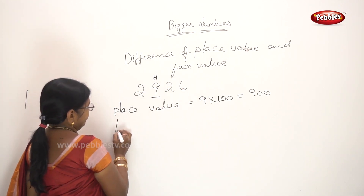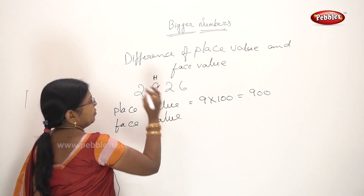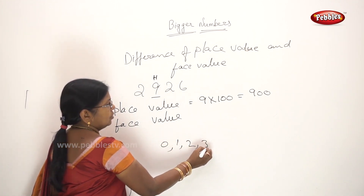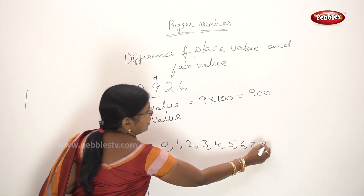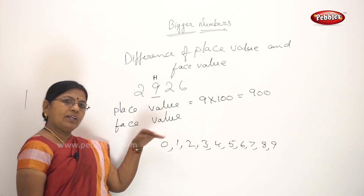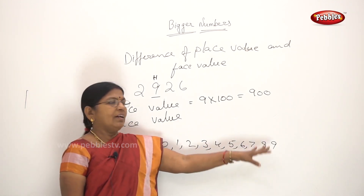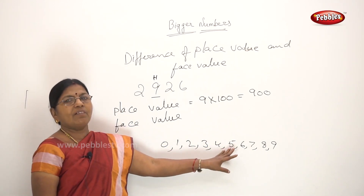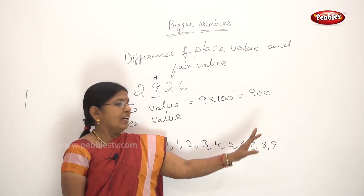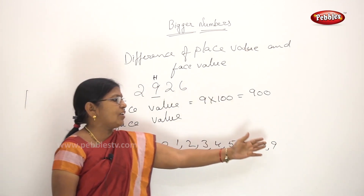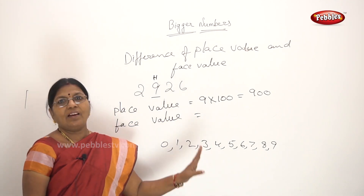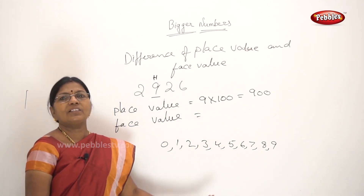What is the face value? Face value means the individual value of the digit itself. The digits are 0, 1, 2, 3, 4, 5, 6, 7, 8, 9. If you have the digit 5, the face value is simply 5. If you call it 9, the face value is 9 — regardless of where the digit is placed. That is the face value — the digit's own value.